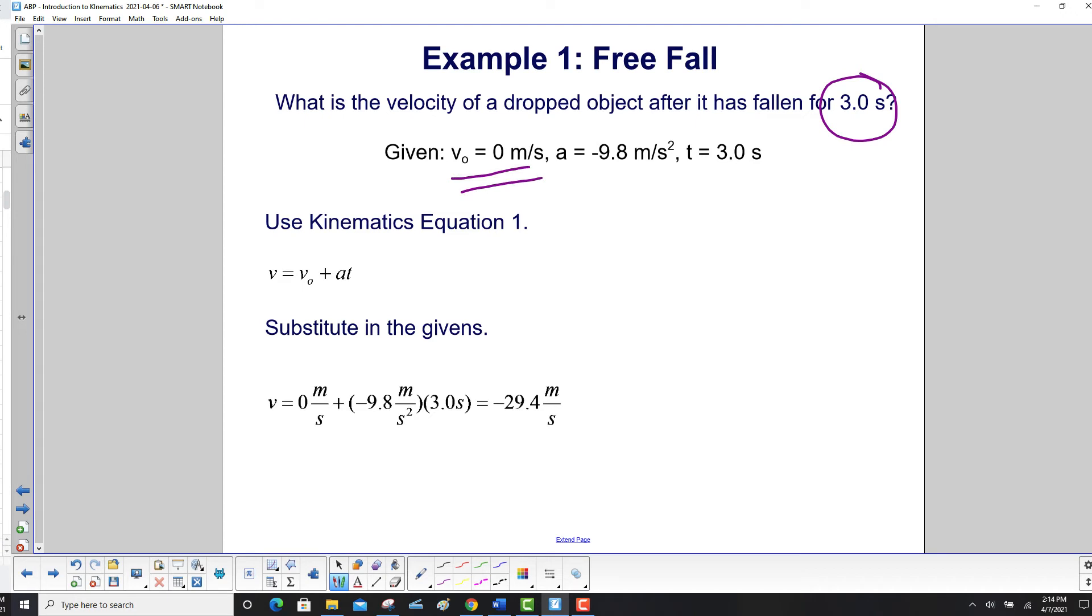And then since you're dropping it, we're assuming you're on Earth here, the acceleration will be negative g, or negative 9.8 meters per second squared. We use kinematics equation number 1. We substitute in our values, there's v0, here's a negative 9.8 acceleration due to gravity, and here's our time. And we get a negative 29.4 meters per second, which means the object is in the down direction. It's moving in the down direction.